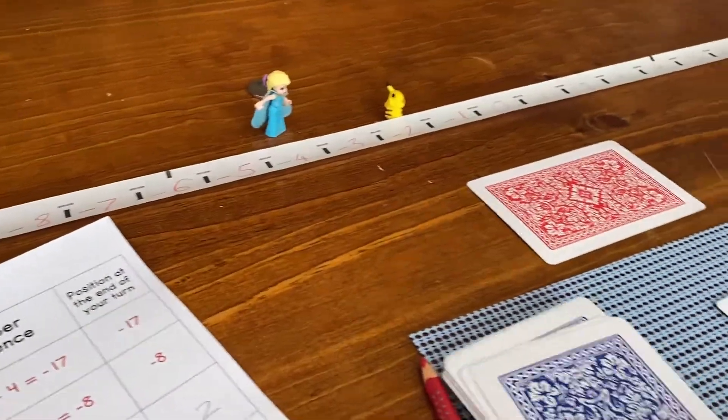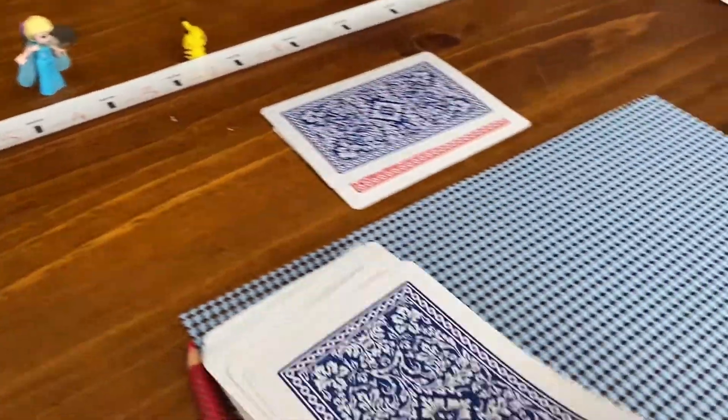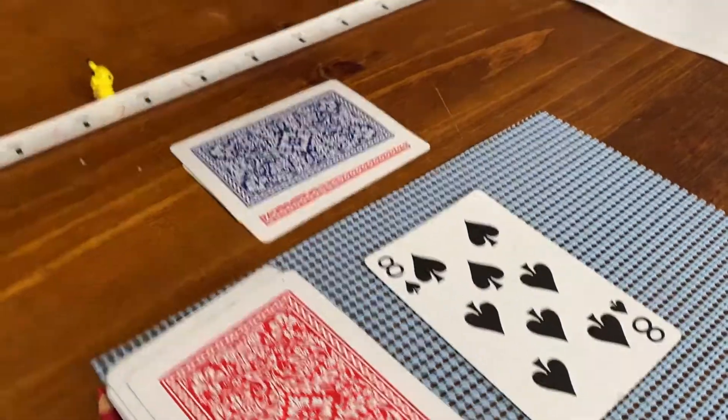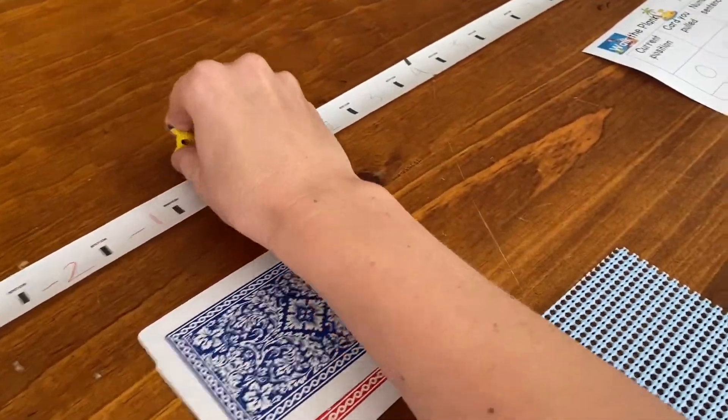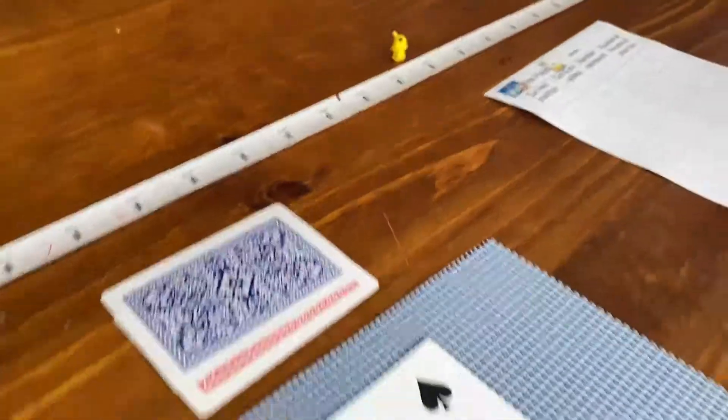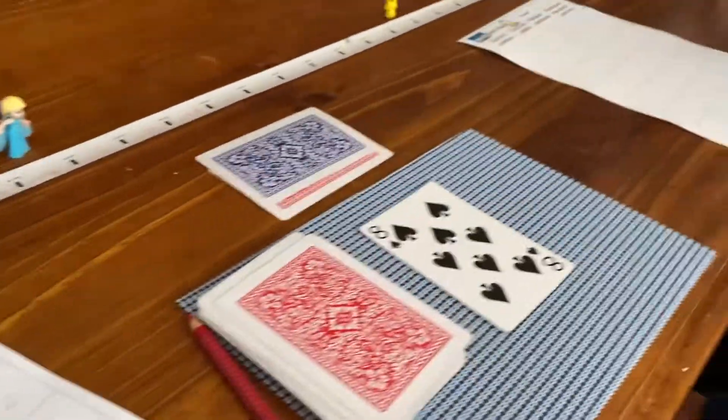All right, my turn, hoping for a black. Yes, okay, so it'd be two to zero and then six more, so I'm on six. I'll record, you can have your turn.